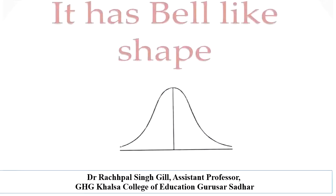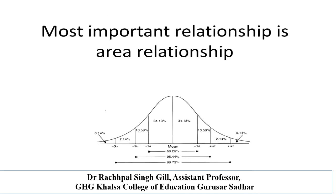The most important thing is the bell-like shape. The most important relationship is the area relationship. From minus one sigma to plus one sigma, the value is 34.13% + 34.13% = 68.26%. From minus two sigma to plus two sigma, the value is 95.44%. And from minus three sigma to plus three sigma, the value is 99.73%. It moves toward 100% but never reaches 100% — it goes 99.73%, 99.8%, 99.9%, but not 100%.